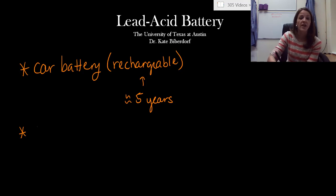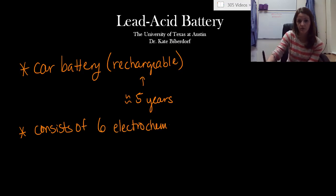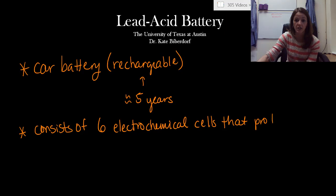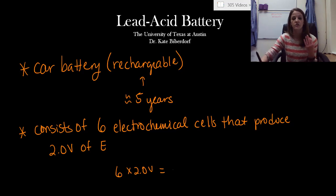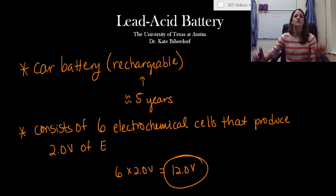So this specific cell consists of six electrochemical cells that each produce 2.0 or two volts of energy. So that means we have six electrochemical cells times two volts of energy each gives us a total of 12 volts of energy. So your lead acid battery is actually a 12 volt battery, but that's because there's six different components in there each that make up two volts of energy.